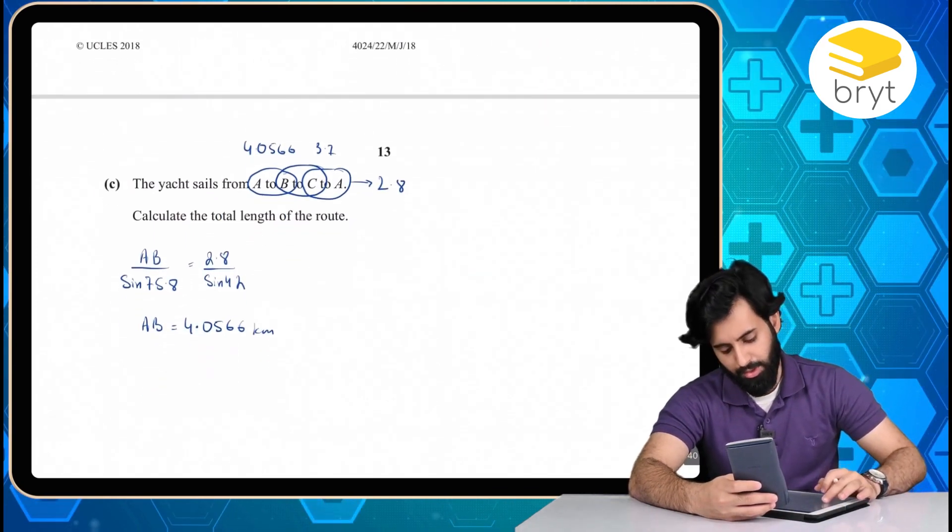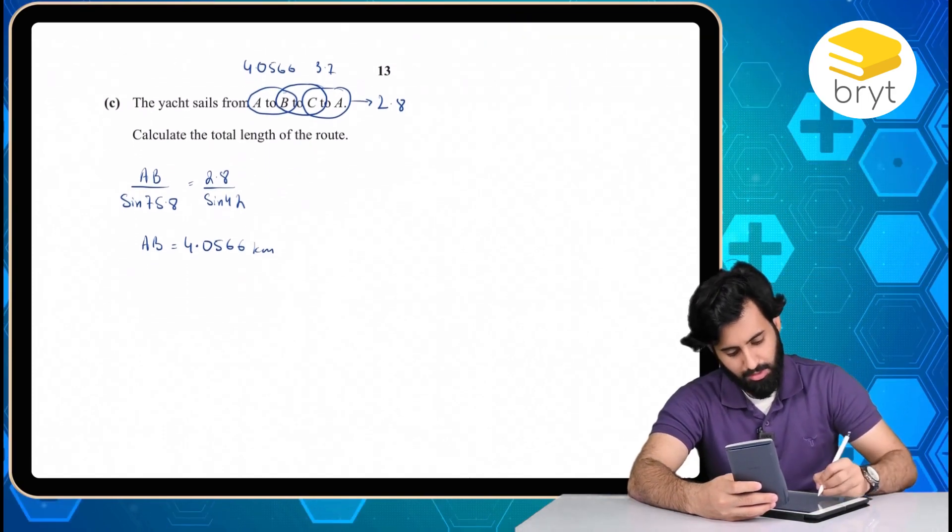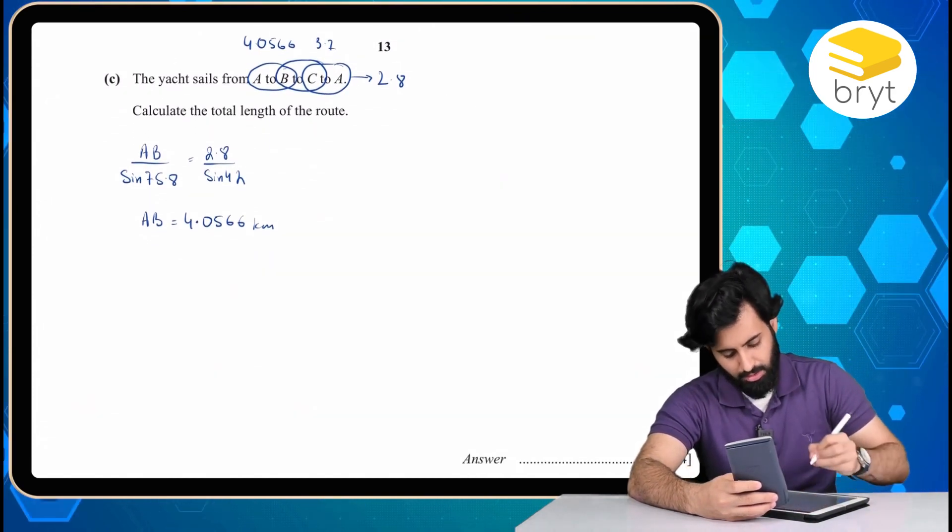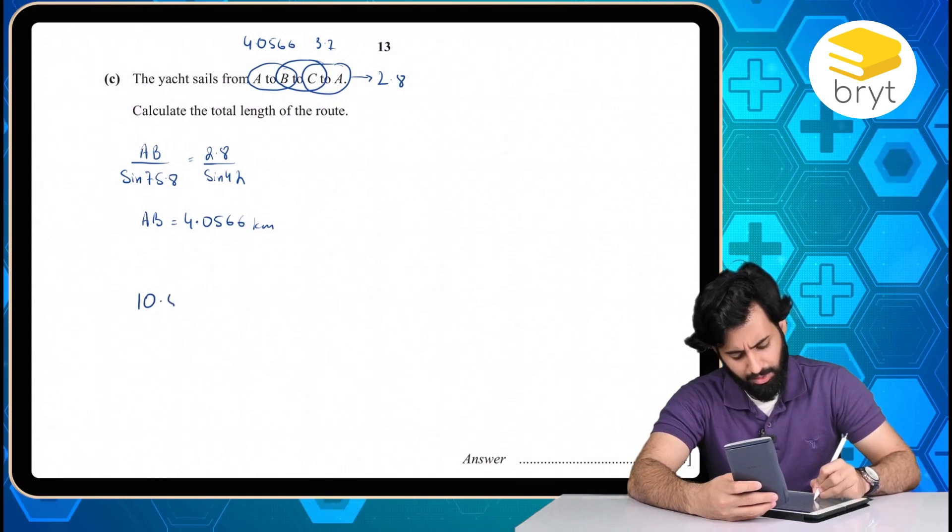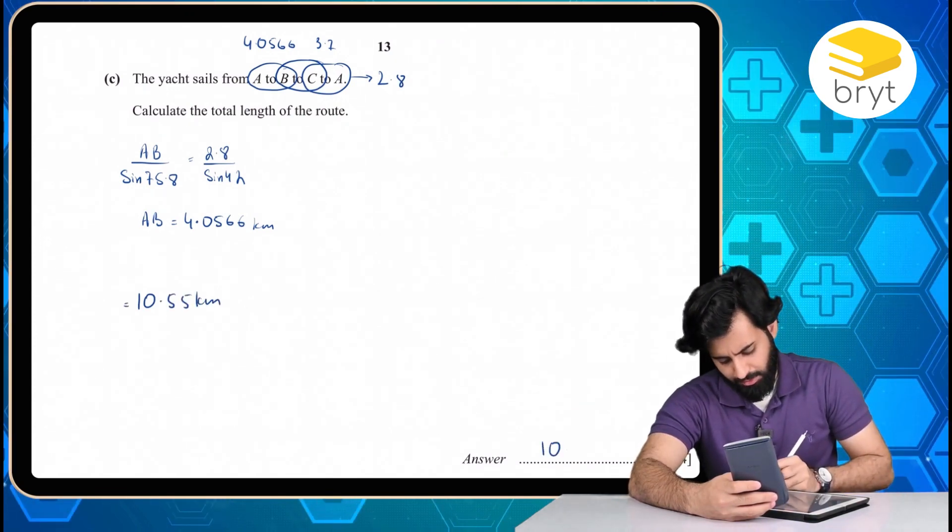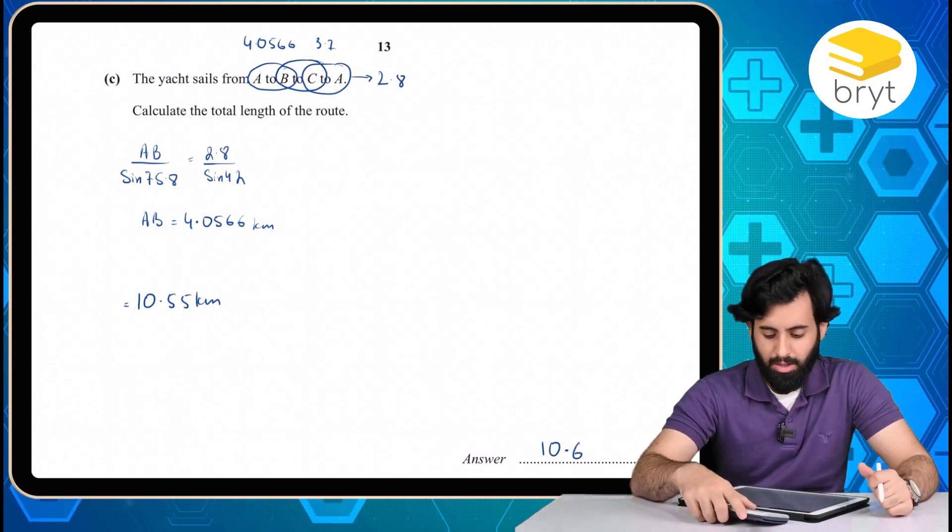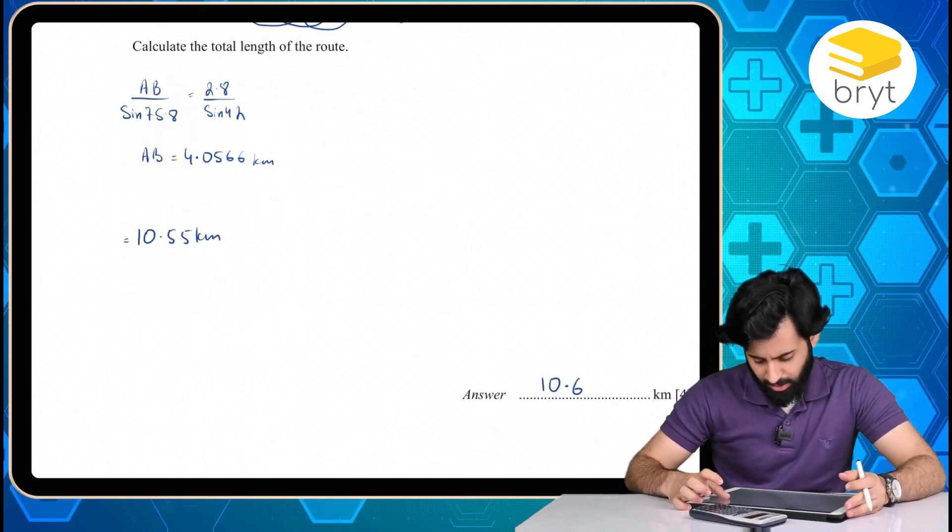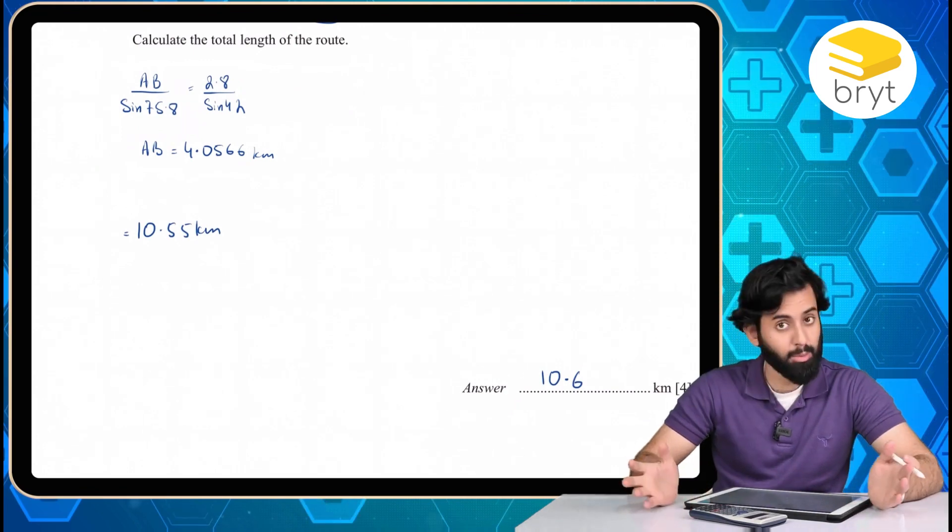And we get 10.55, which if rounded off, correct to 3 significant figures, turns out to be. So I'm going to write 10.55 first. And then if I round this off, correct to 3 significant figures, I get 10.6 kilometers. And there you go. That's our final answer. And with that, we have completed the question.